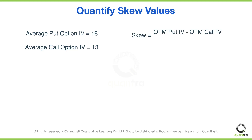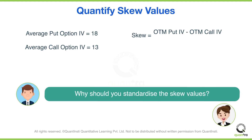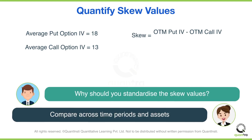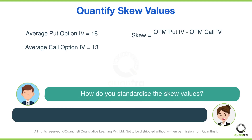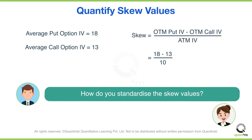Now you will calculate the skew by subtracting the average implied volatility of the call options from the average implied volatility of the put options. But wait — you have to standardize these skew values as well. Standardizing the skew values helps us compare them across time periods, as well as with the skew values of other assets. You standardize by dividing the skew by the ATM IV. Since the ATM IV is 10, the final skew value will be (18 minus 13) divided by 10, which equals 0.5 or 50%.